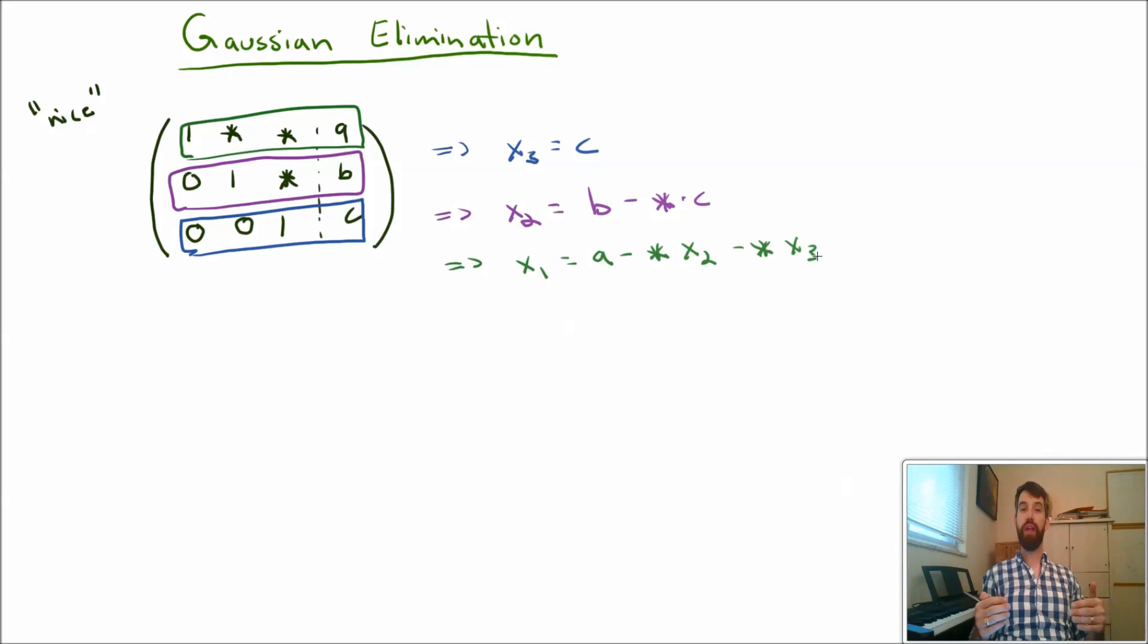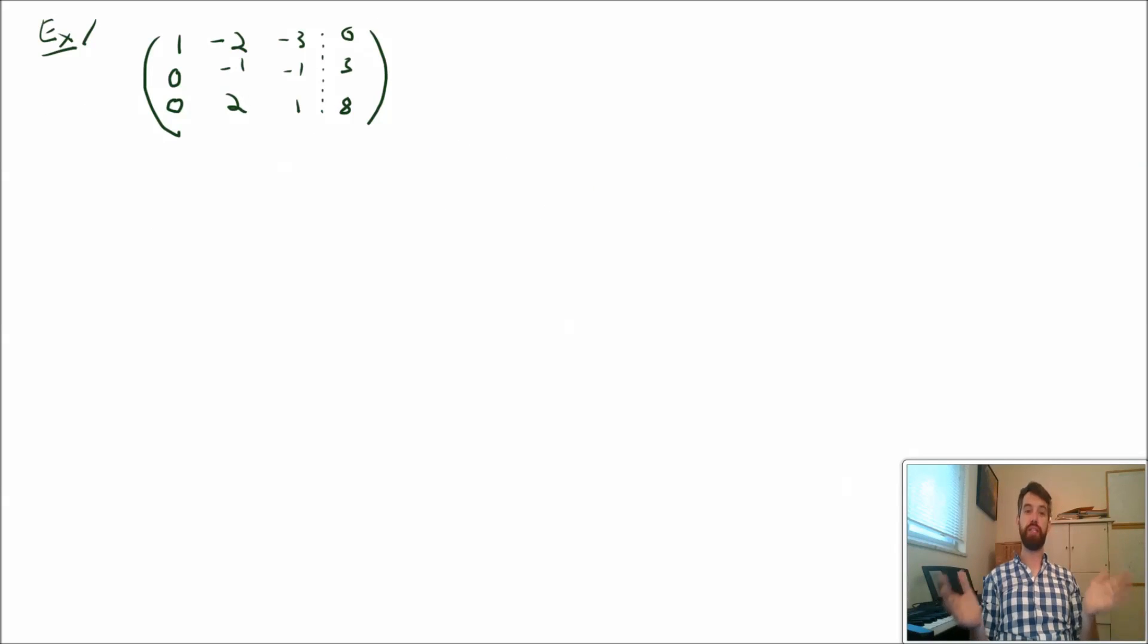So I can do this sort of back substitution where I work from the bottom row up. I figure out the x₃, then the x₂, then the x₁. And that's why I think that things that are of this form are really convenient. Alright, so let's do an example.